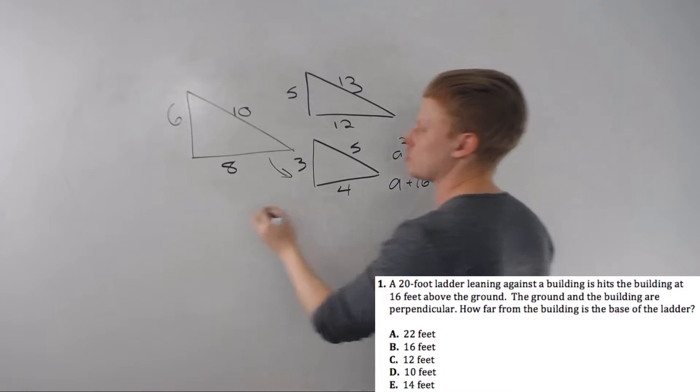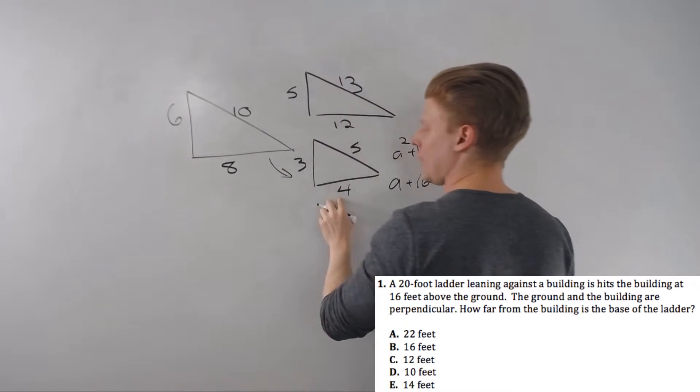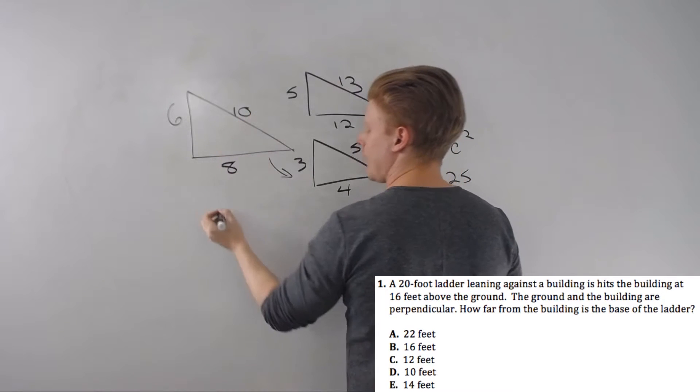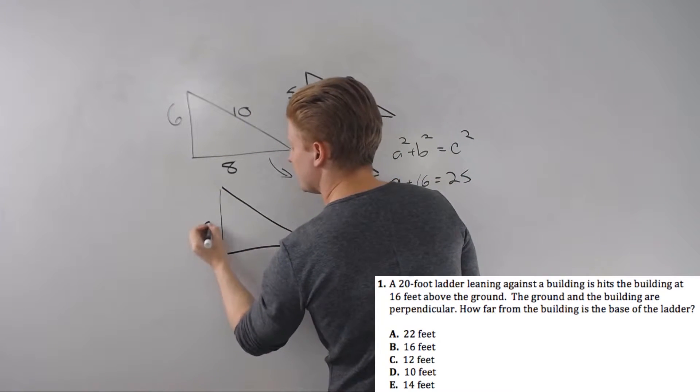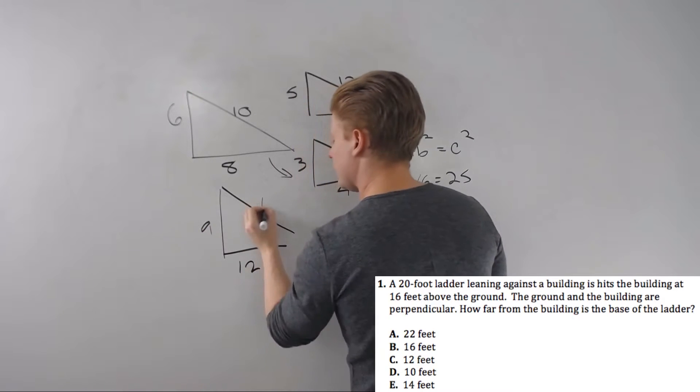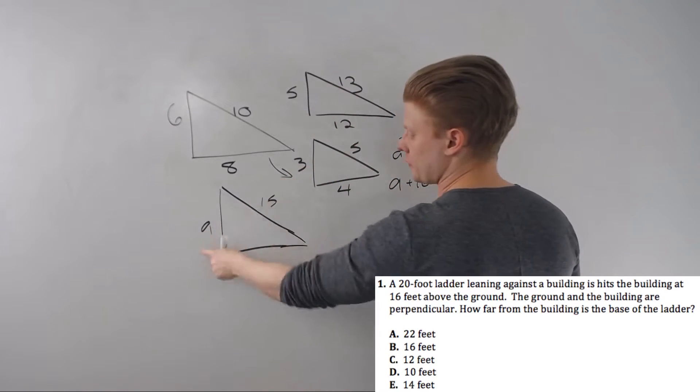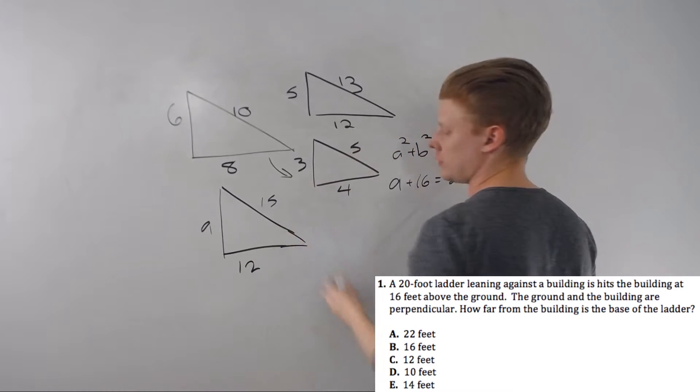Those are the three you'll see: the 3-4-5, then 3 times 2 is 6, 4 times 2 is 8, 5 times 2 is 10—that's the 6-8-10. And you will, from time to time, see the 9-12-15. That's 3 times 3, 4 times 3, 5 times 3.